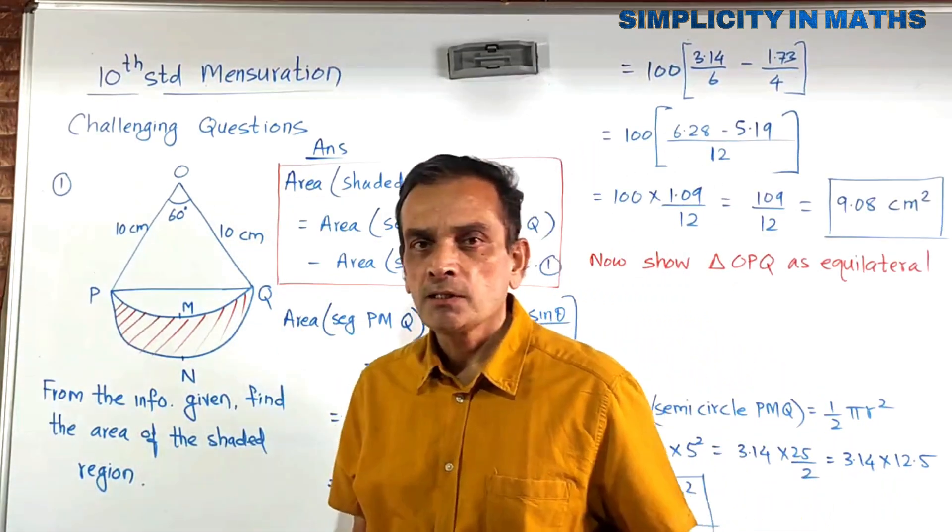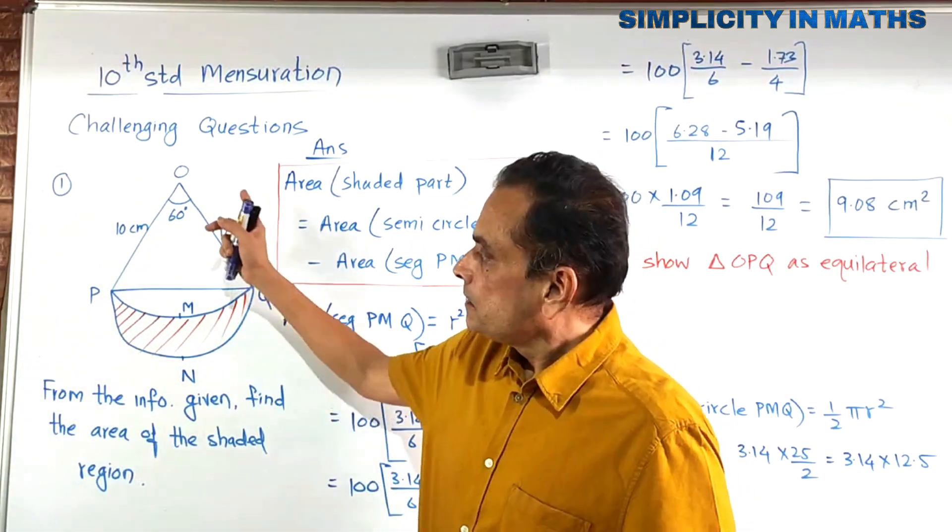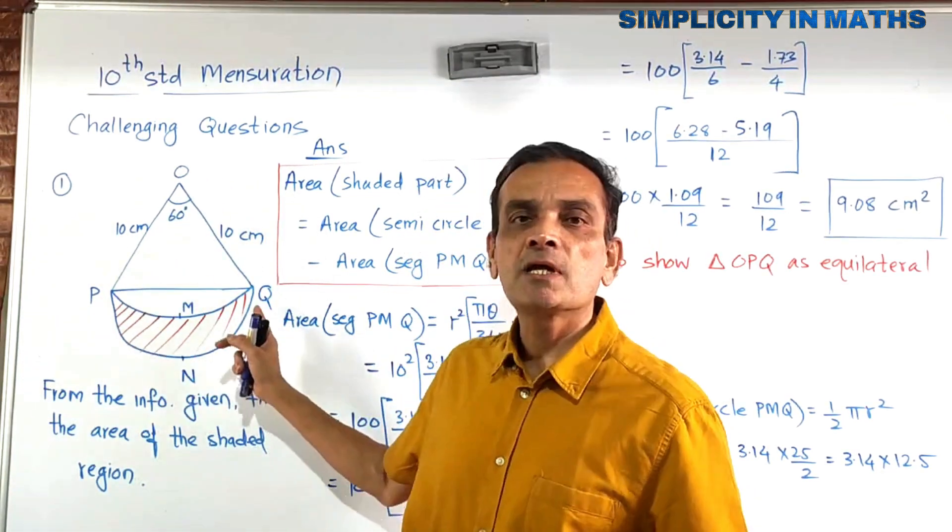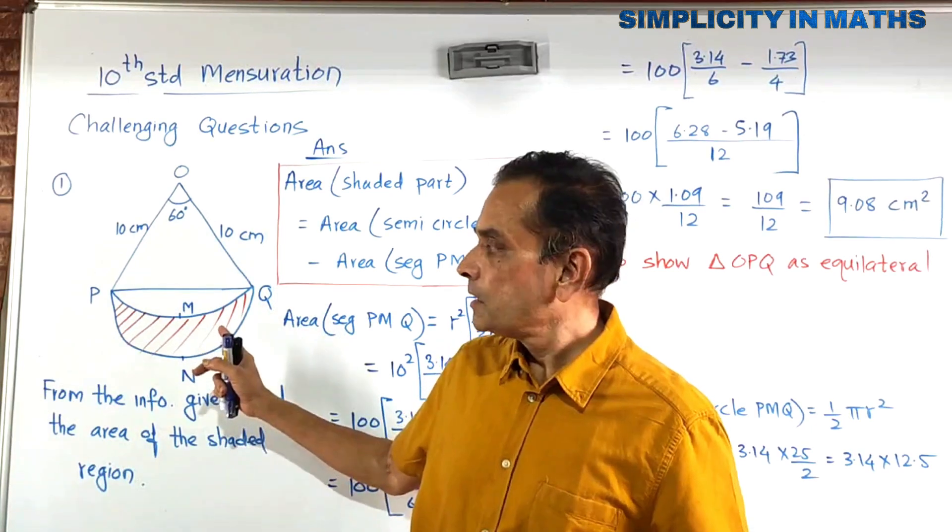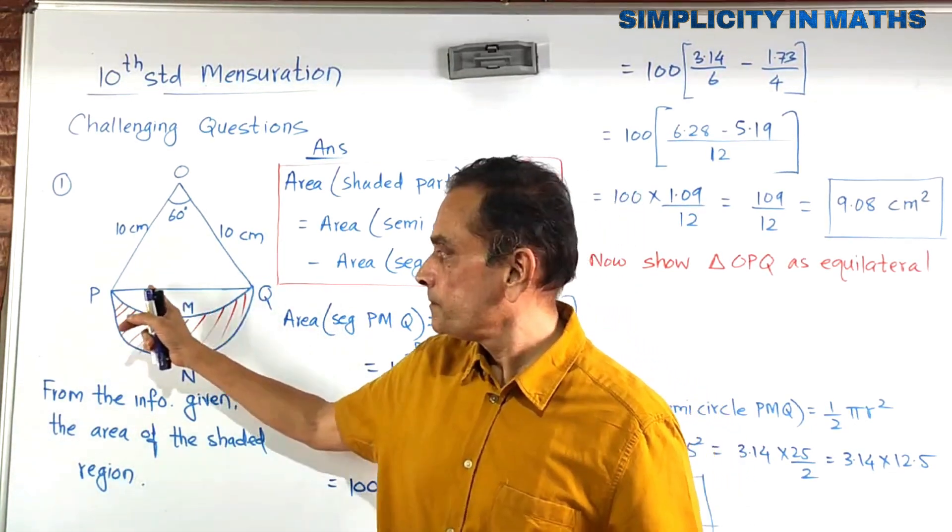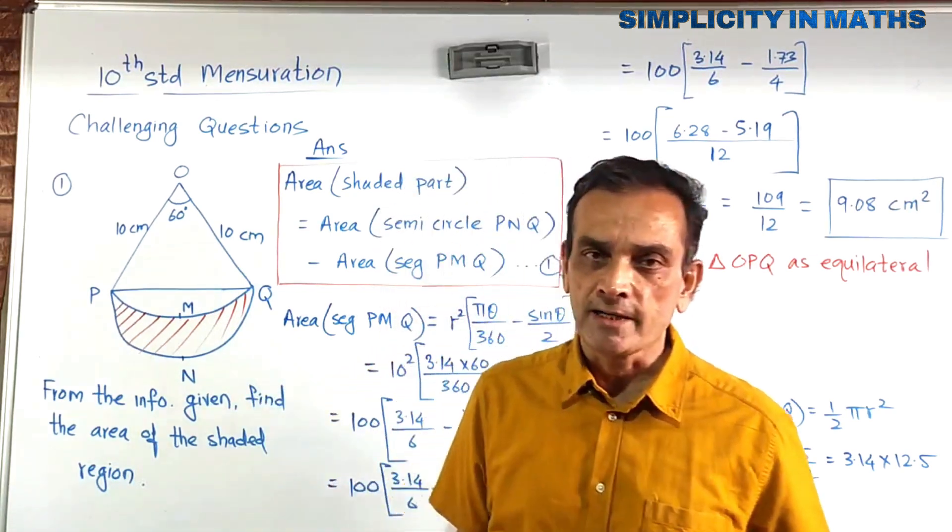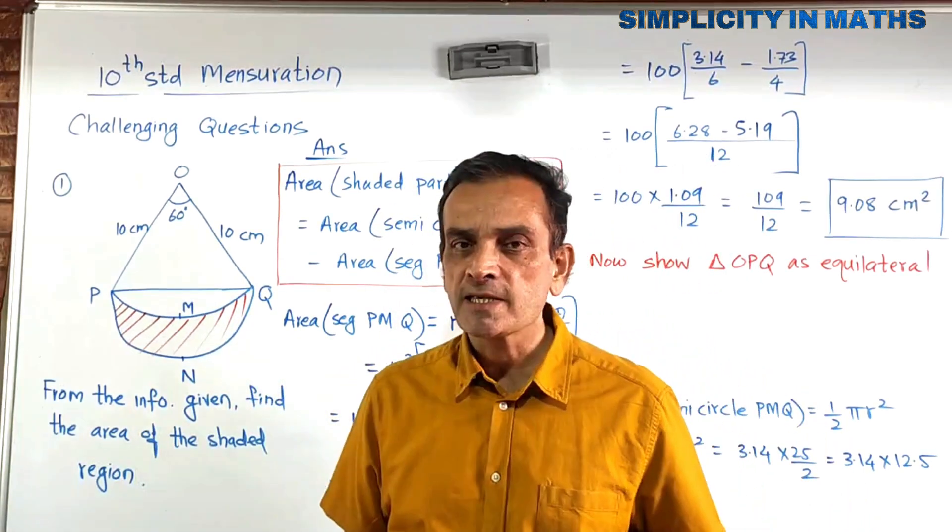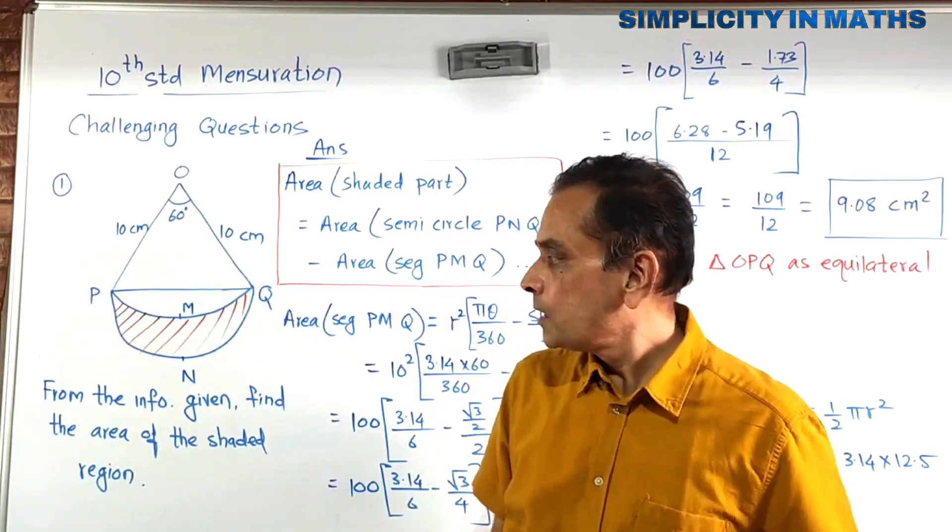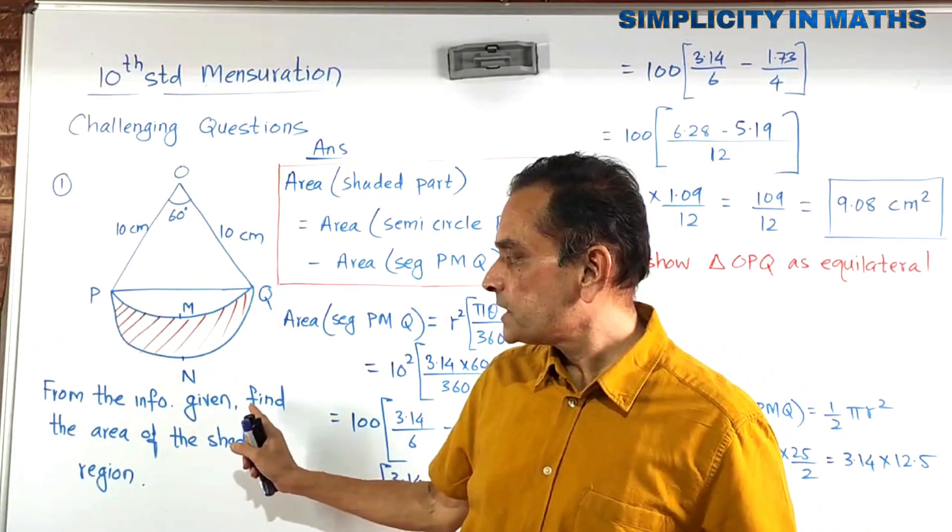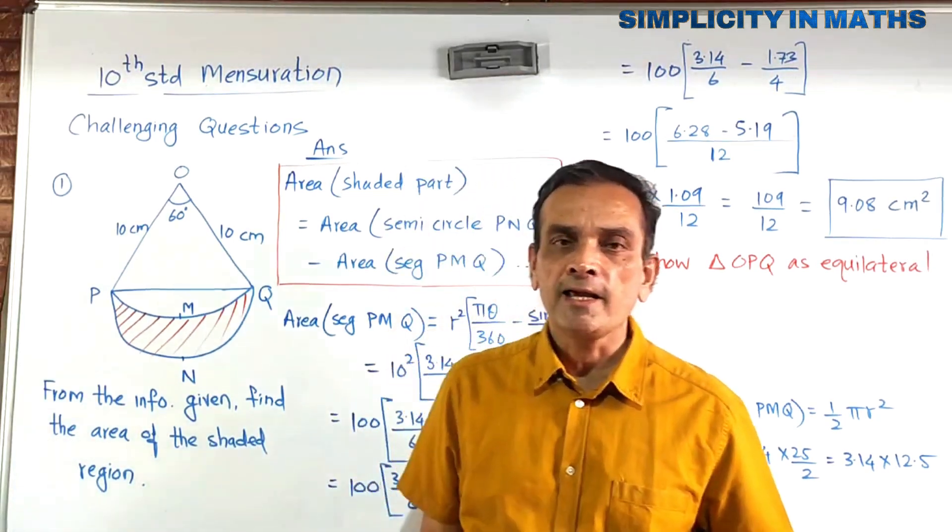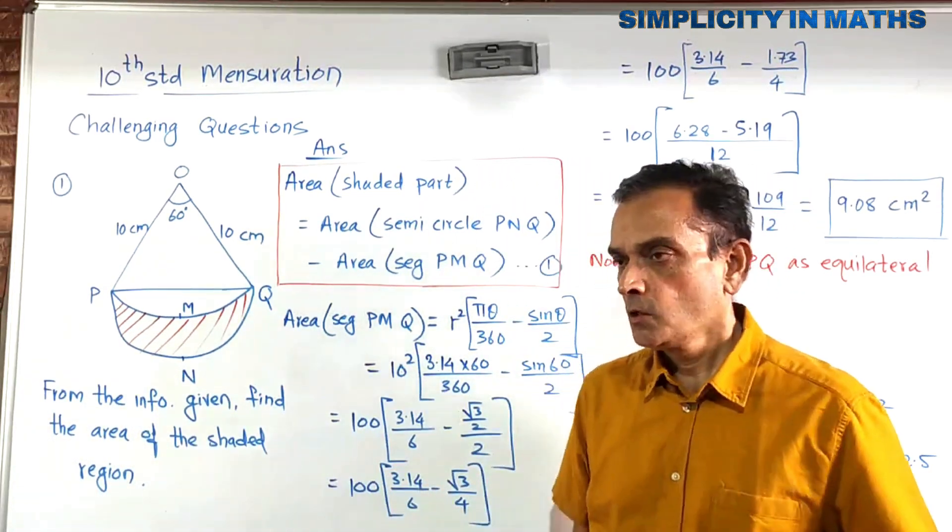You can see in the diagram here that a triangle is given and we know that a semicircle is given. Inside that semicircle, you have a small segment over here. You know the meaning of segment, not the regular segment, this segment PMQ. From the information given, find the area of the shaded part.